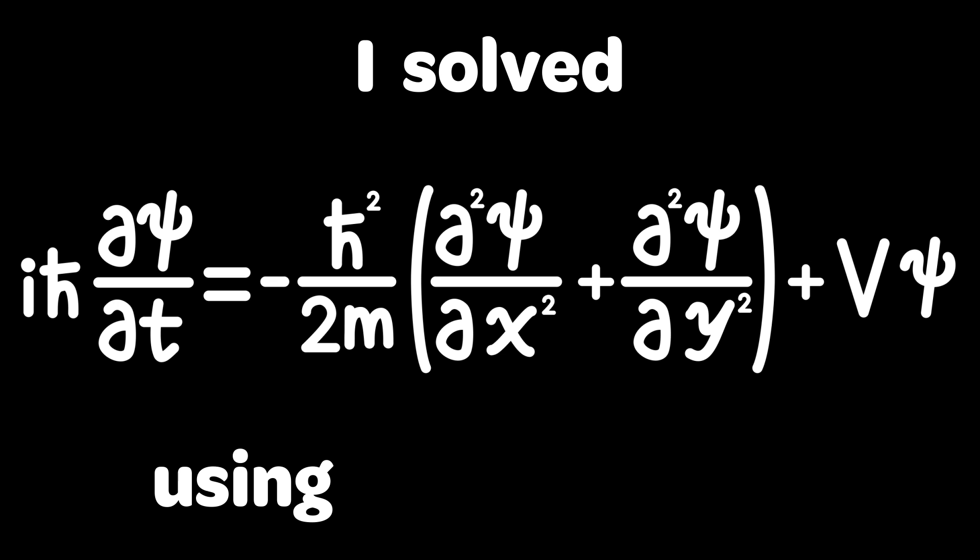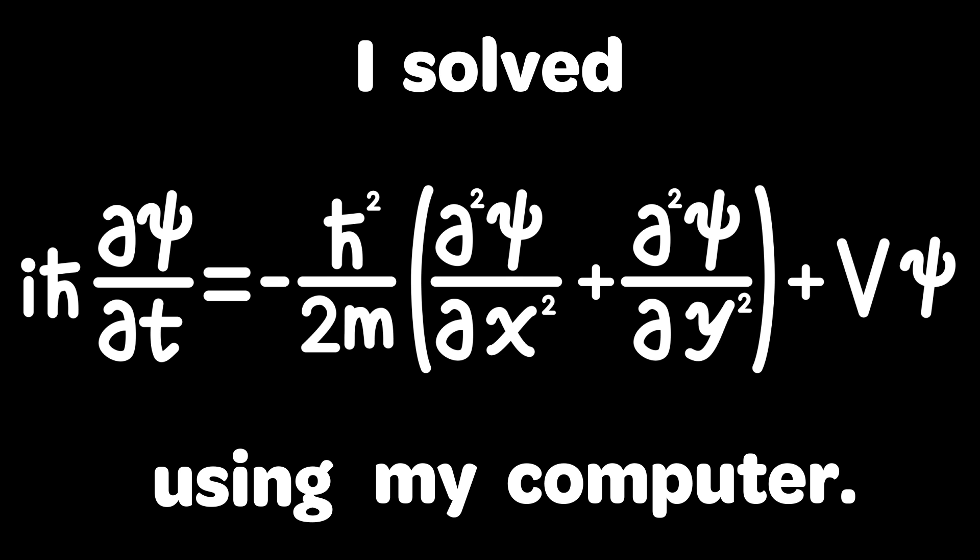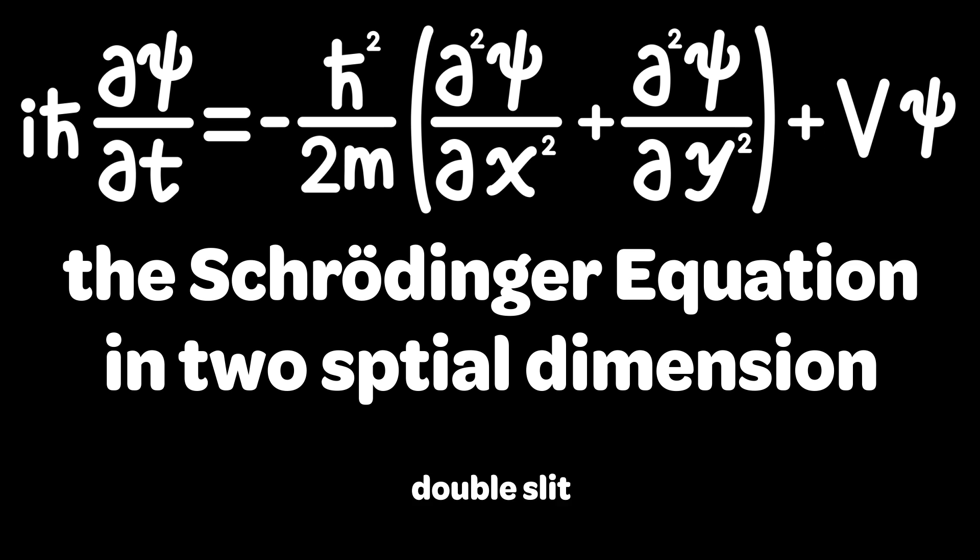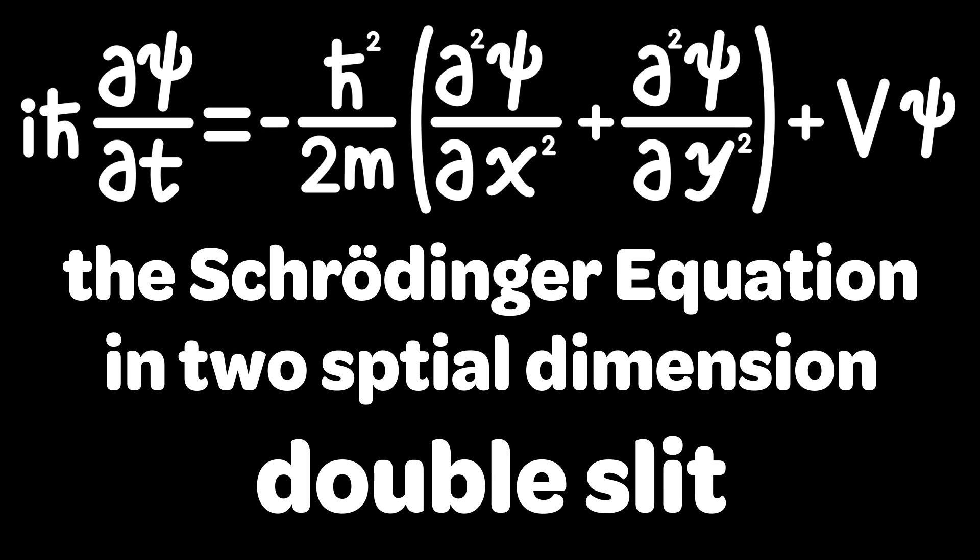Hi, I solved this using my computer. The equation is called the Schrödinger equation in two dimensions and I solved it for a double slit experiment. Let me show you the simulation results first and then explain every detail.